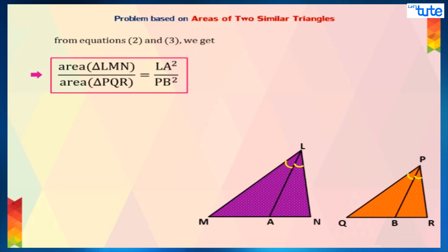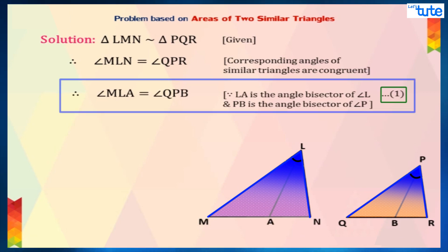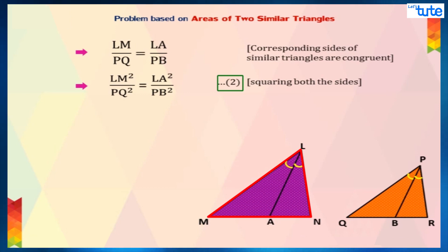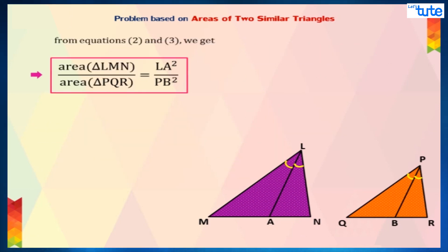So, now that we have solved the question, let us quickly revise it. From the given information, we concluded that angle MLA is equal to angle QPB and considered it as equation 1. Next, by proving triangle LMA similar to triangle PQB, we got LM upon PQ equal to LA upon PB. We squared this equation and considered it as equation 2. Then, according to the theorem on areas of two similar triangles, we could see that area of triangle LMN upon area of triangle PQR equals to LM square upon PQ square, taken as equation 3. At last, by comparing equation 2 with equation 3, we could prove that area of triangle LMN upon area of triangle PQR equals to LA square upon PB square.